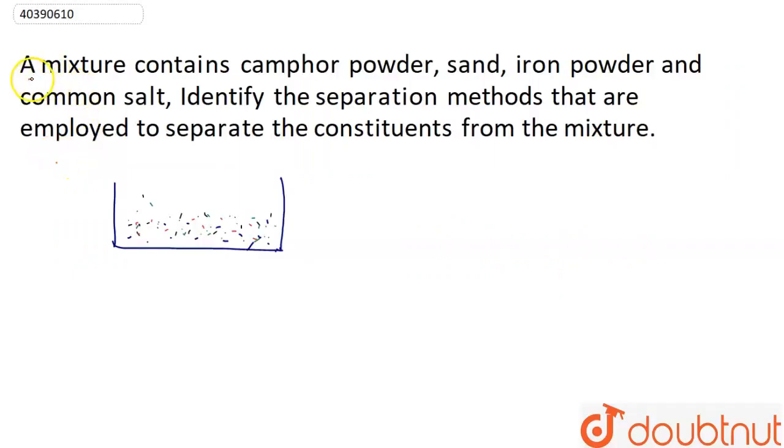Hello everyone, so the question is: a mixture contains camphor powder, sand, iron powder, and common salt. So we have 4 things: camphor powder, sand, iron powder, and common salt. So we have 4 different types of compounds here with different colors.